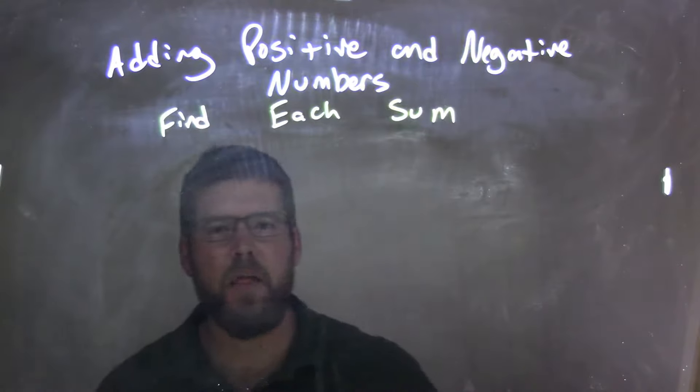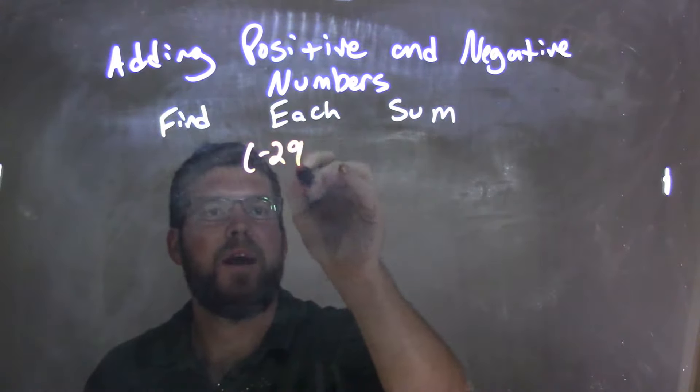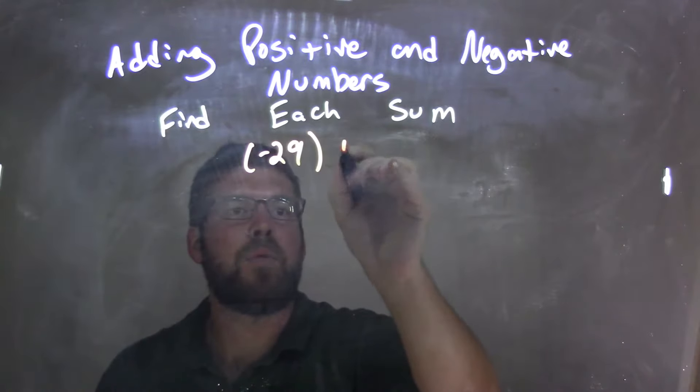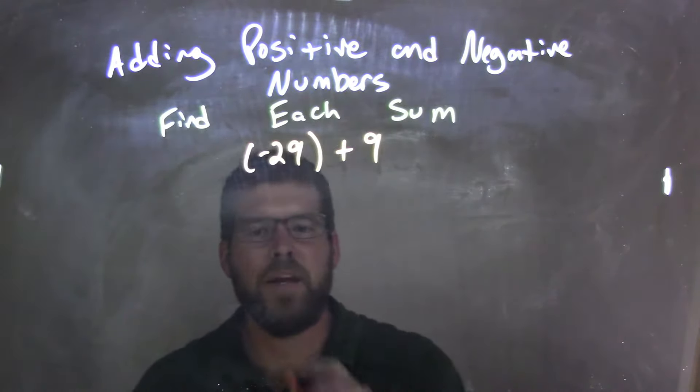So if I was given this expression, negative 29 plus 9, this one I find easy to see with a number line.